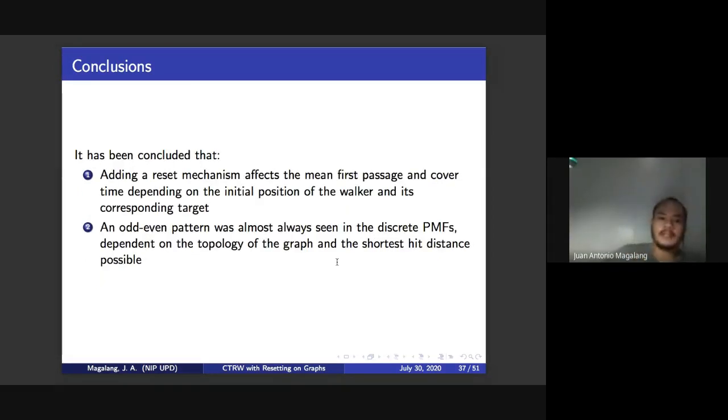So we've concluded that adding a reset mechanism affects the mean first passage time and cover time depending on the initial position of the walker. We found out that it generally increases the mean first passage time and cover time as you increase the resetting probability, which is expected. And the second one is an odd even pattern was almost always seen in the discrete probability mass functions. And this is dependent on the topology of the graph and the shortest hit distance possible. So that's all for my talk.